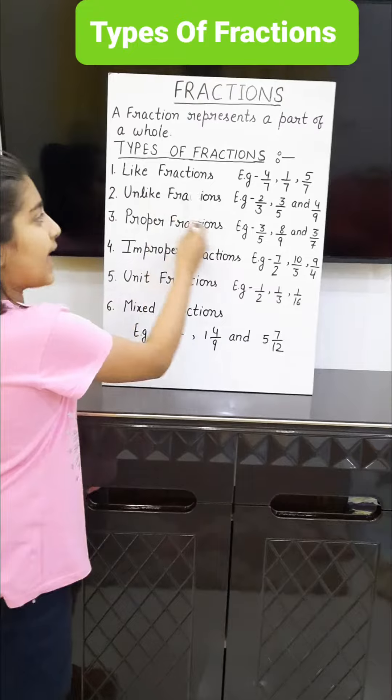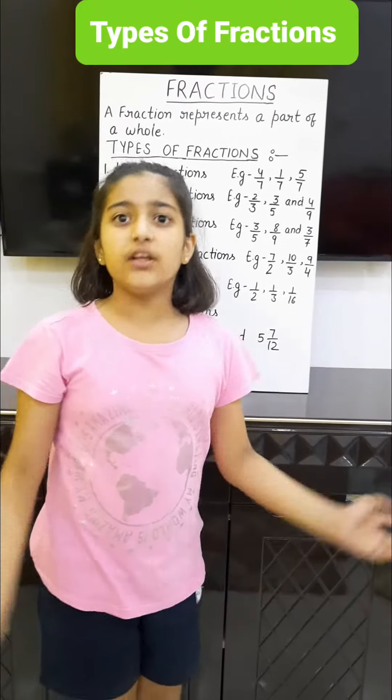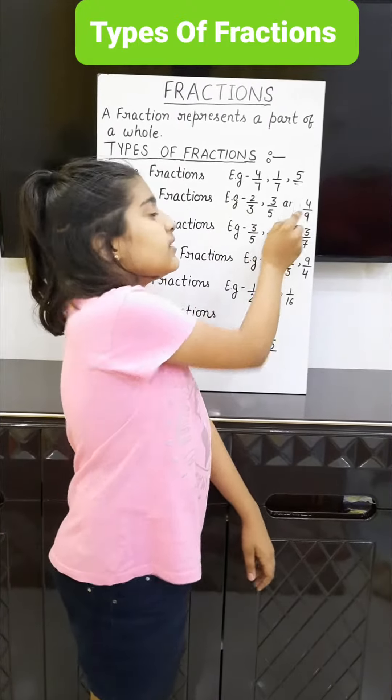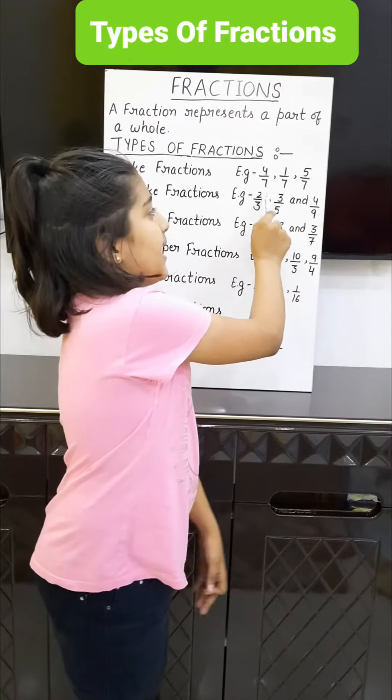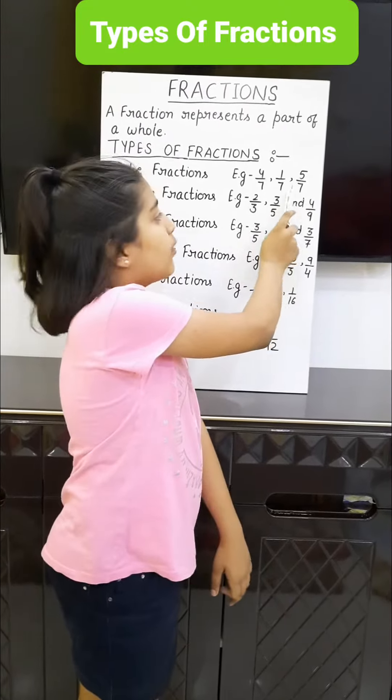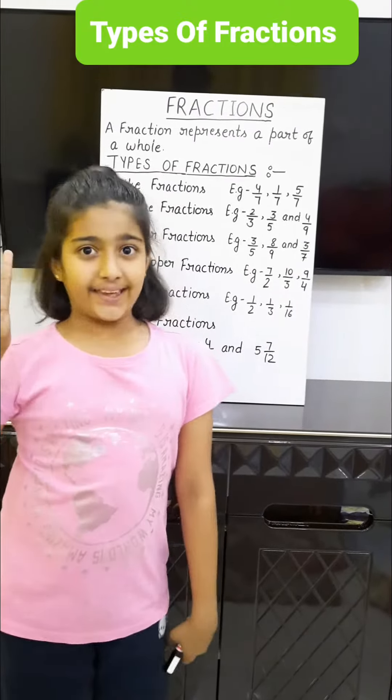First, like fractions: fractions in which the denominators are the same. Example: 4/7, 1/7, 5/7.